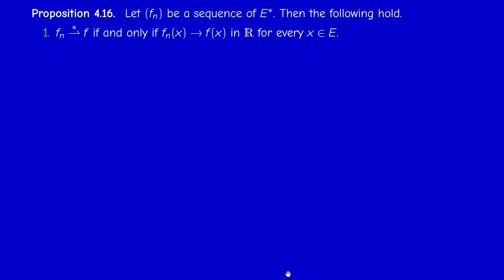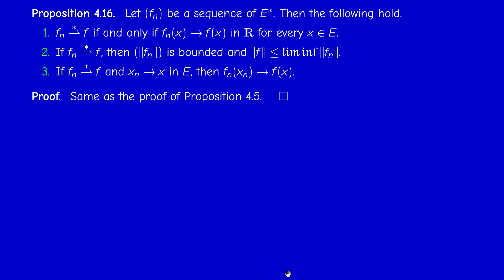Proposition 4.5 analog: fₙ converges weak-star to f if and only if fₙ(x) → f(x) in ℝ for every x ∈ E. A weak-star convergent sequence is bounded, and ‖f‖ ≤ lim inf ‖fₙ‖. Also, if fₙ → f weak-star and xₙ → x strongly in E, then fₙ(xₙ) → f(x). This is a good exercise: just adapt the proof of Proposition 4.5 to this case.